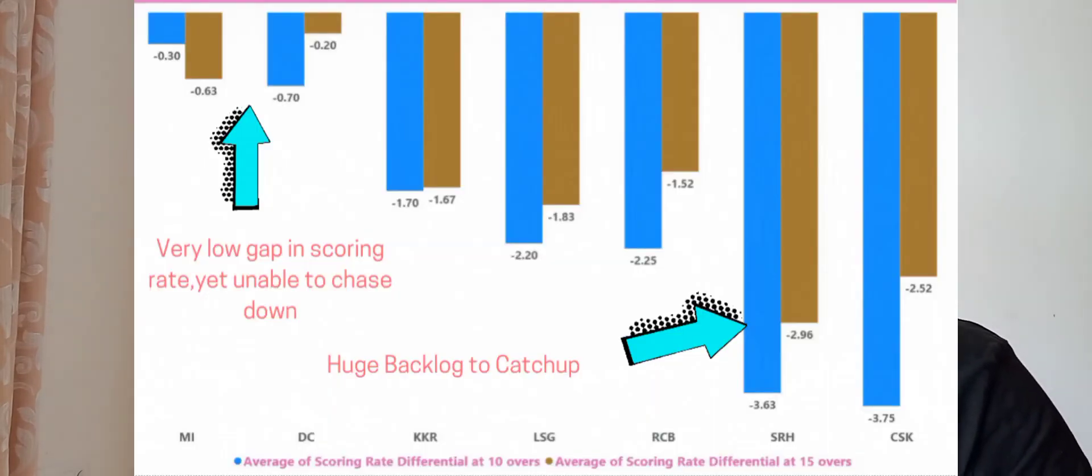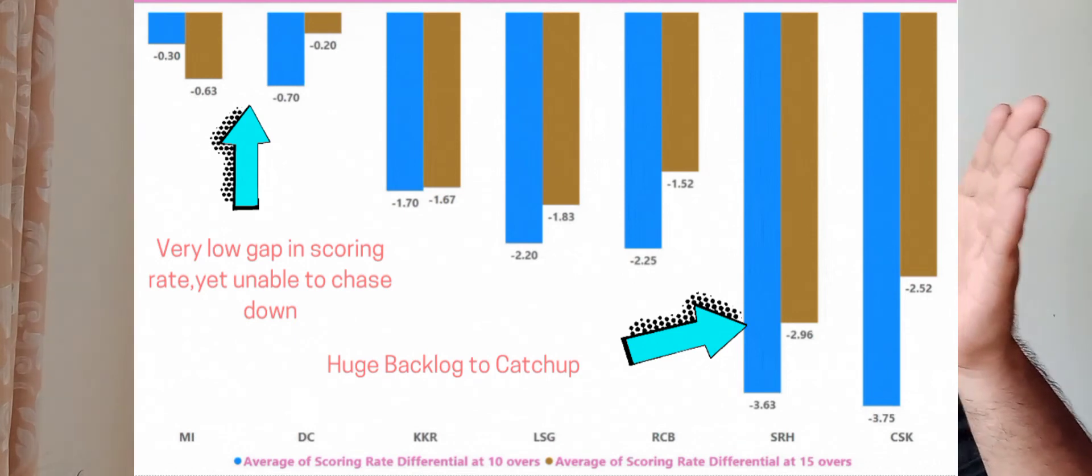For failed run chases we see a very common story in most places in this upcoming visual. It tells you that most teams have had a huge backlog at the end of the 10 over mark, and that backlog is not really closed down swiftly when they reach the 15 over mark. The gap and the backlog is huge for all of these teams.